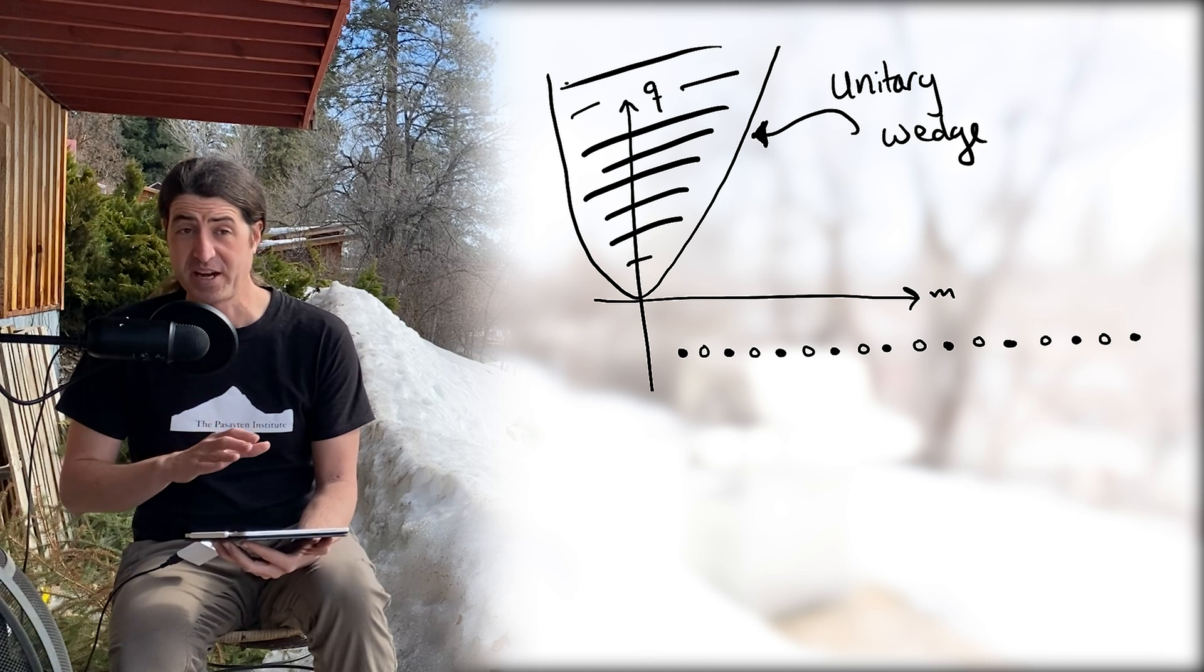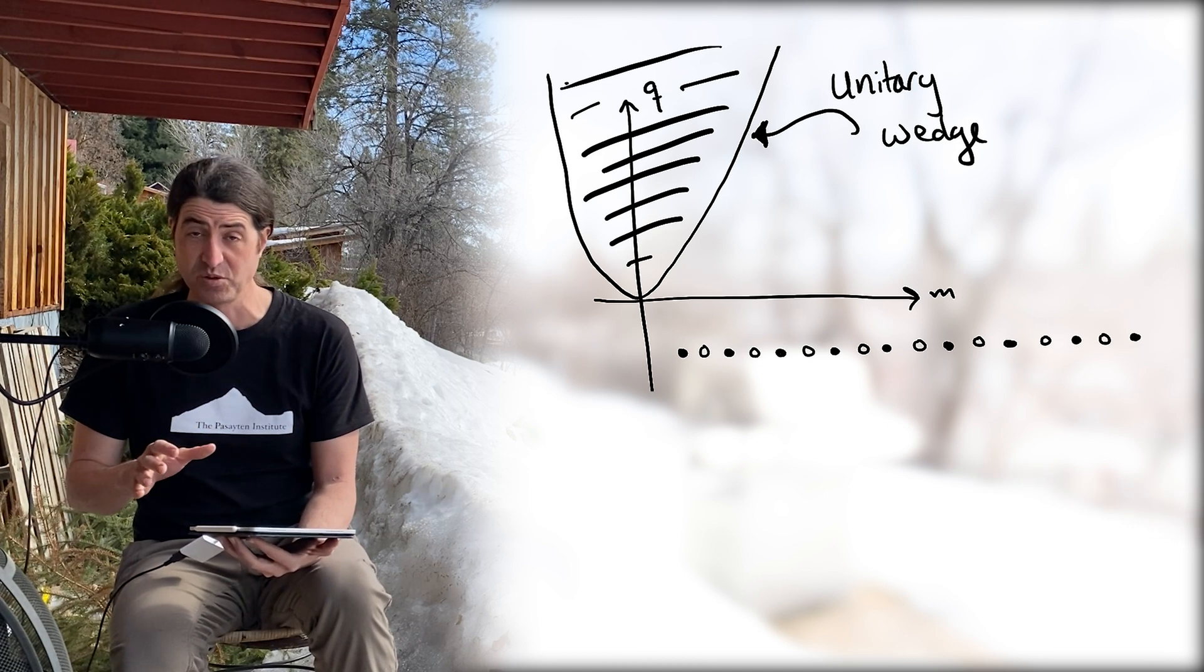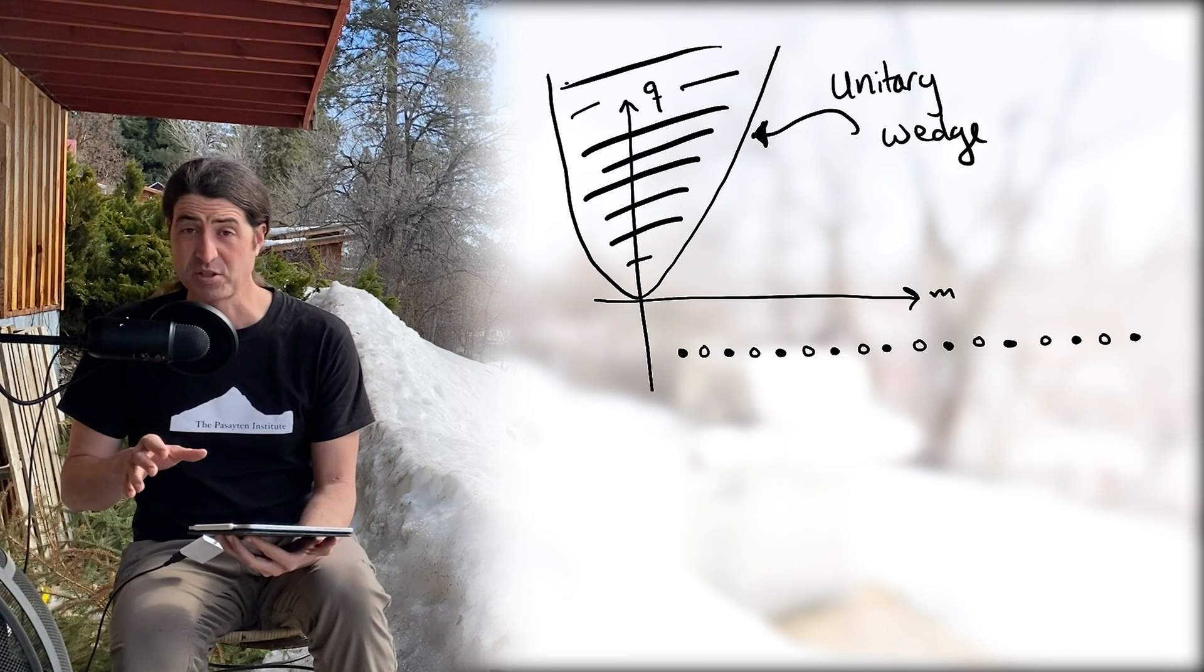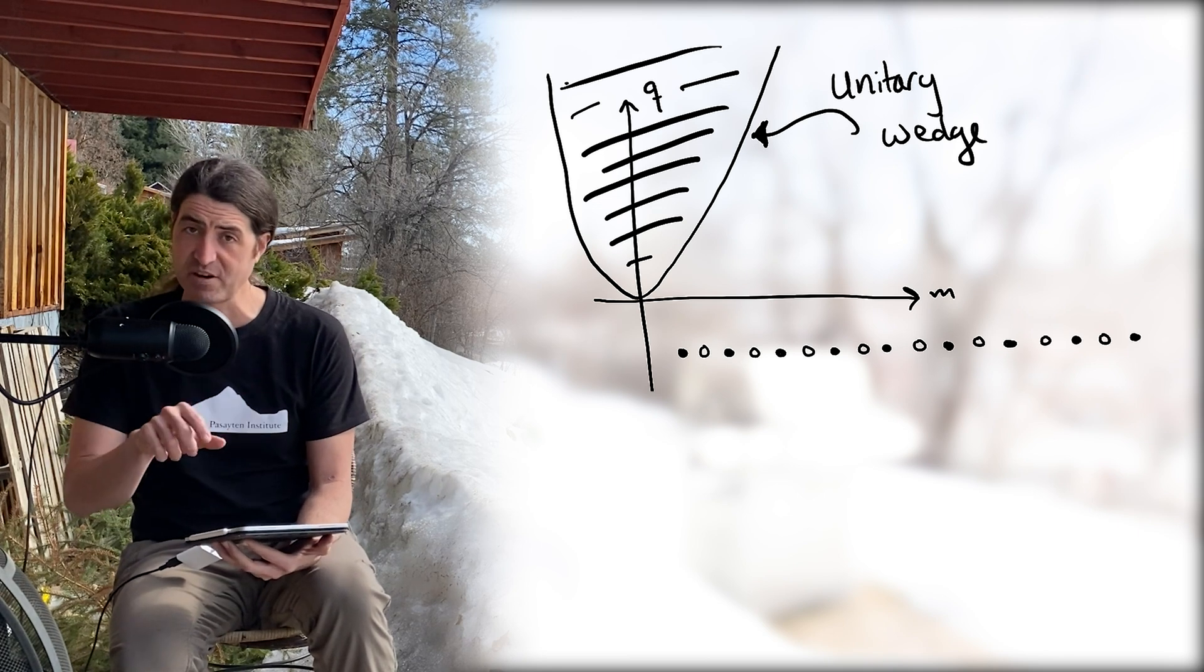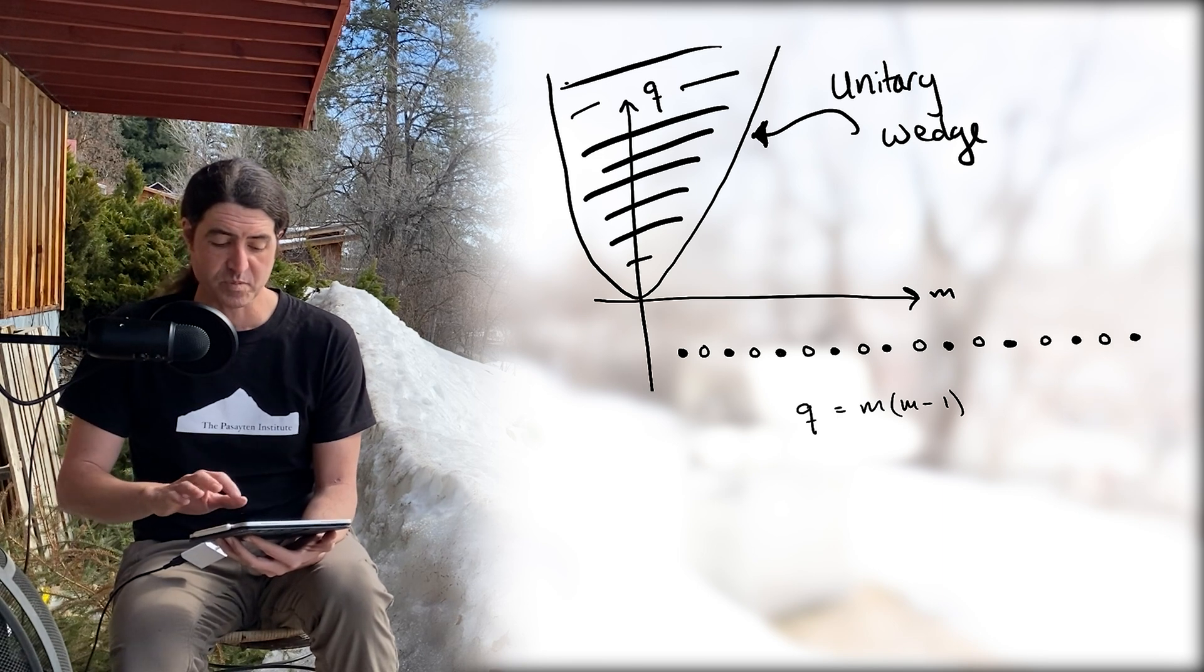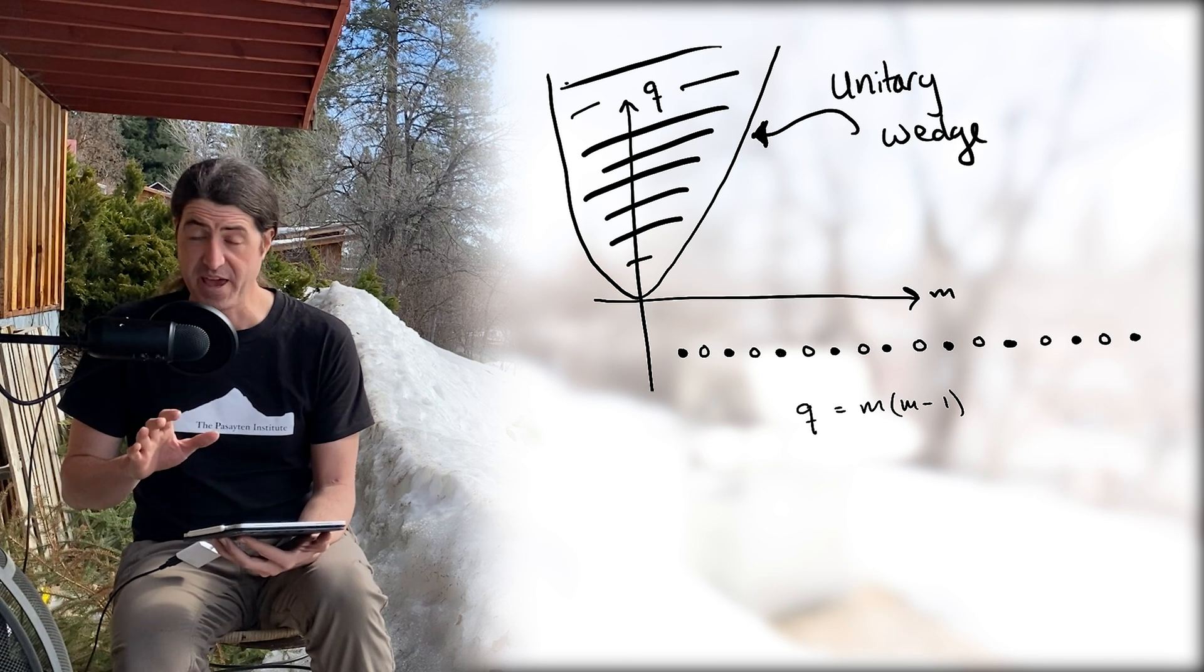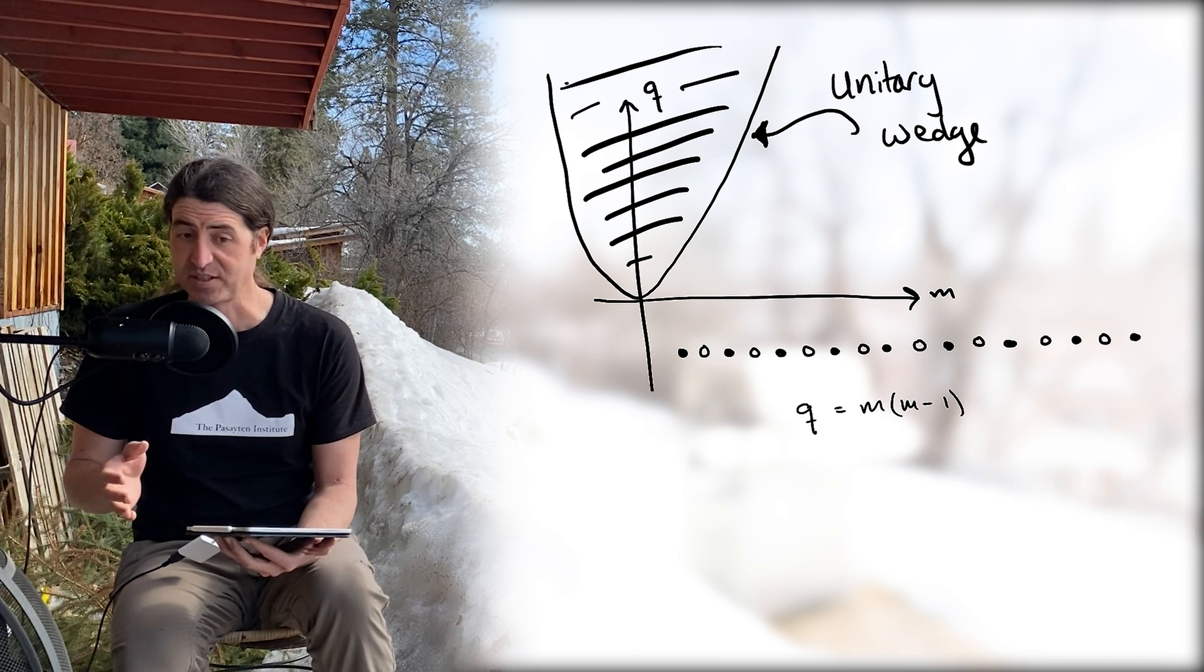Let's go poke our heads around and see what this means. Remember that the parabolas that defined the allowed unitarity regions were defined in terms of Q equals m squared plus or minus m. Let's specifically focus our attention on m squared minus m, that right parabola, and let's solve for m assuming that Q is equal to minus three sixteenths.